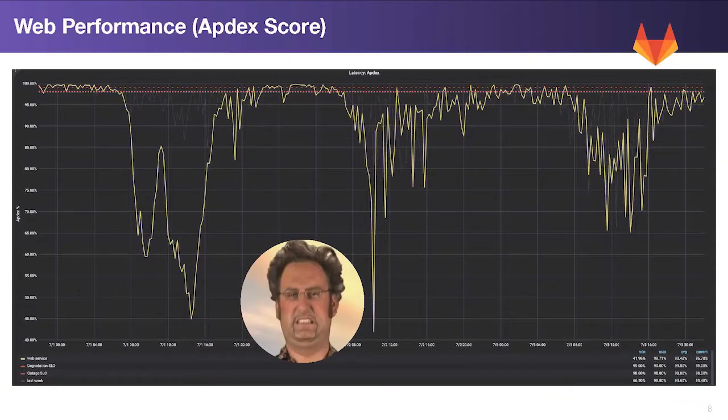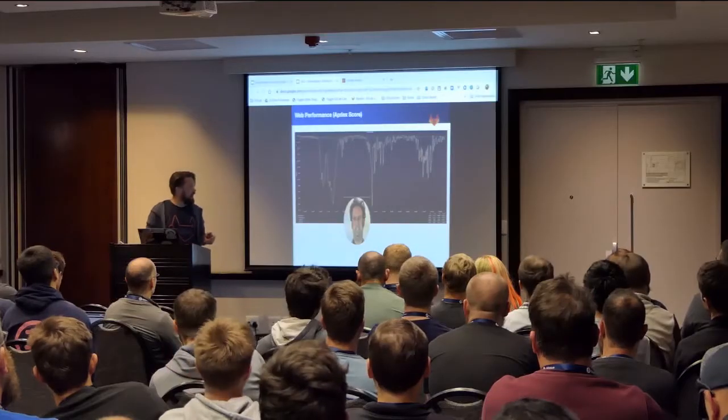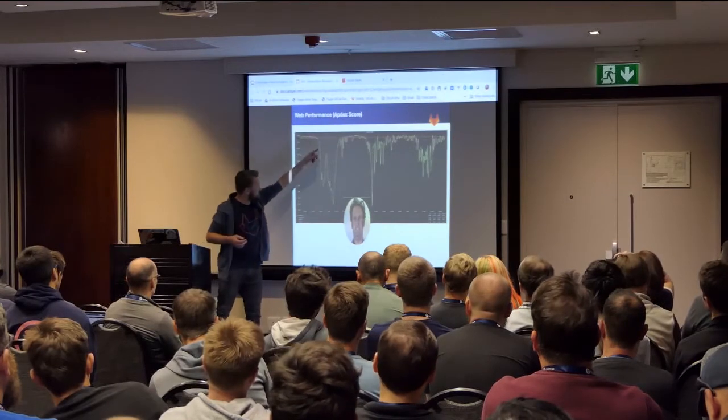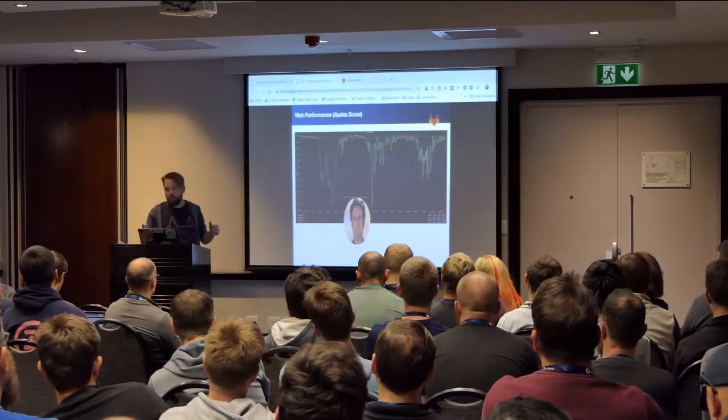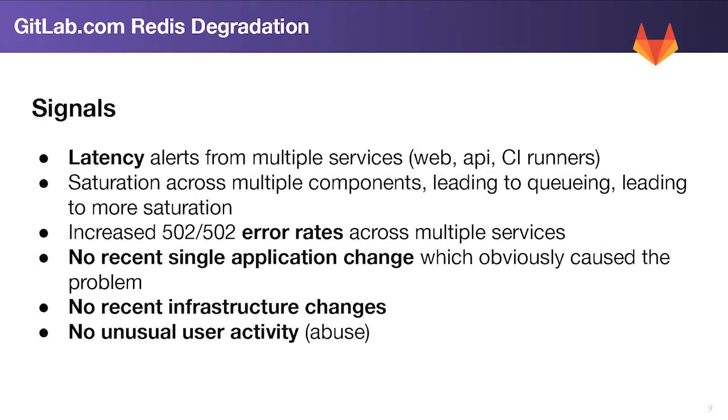It all started with this graph — this is the Apdex score of our web service. The higher it is the better. There's a red line across the top which is the SLO for this metric. When we go below that red line we're in trouble, and we were well below it. We started seeing major slowdowns on our web endpoints, then our API fleet started slowing down, requests started queuing on Unicorn workers, and we had lots of side effects. Things were in a really bad state. We went through the normal checklist of usual suspects.